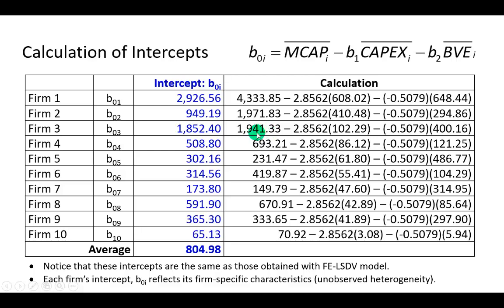I calculate the intercepts using this definition, which we already determined. And so these come out to be the intercepts for each of the ten firms. The average of these is 804.98.